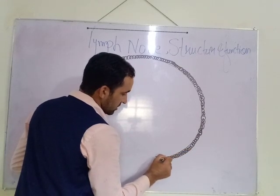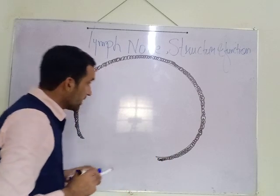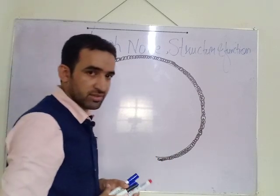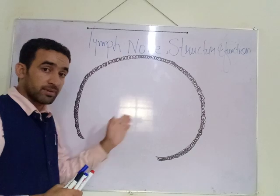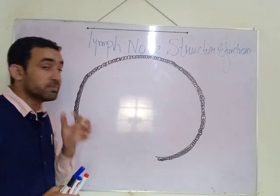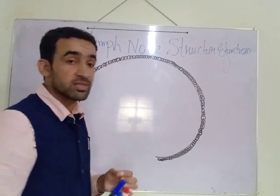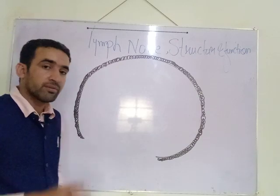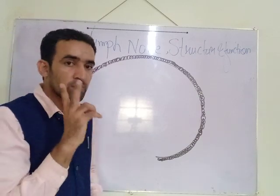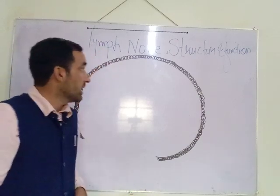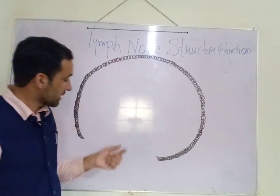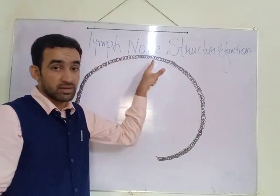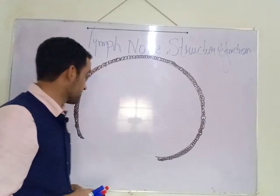It is a small encapsulated structure which is present throughout the passage of lymph fluid — that is the very brief and easy definition of lymph node. A lymph node has two main surfaces: one concave surface and one convex surface.